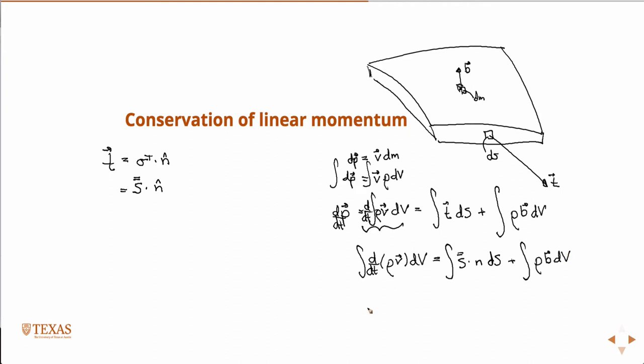Does anyone remember from vector calculus, Calc 3, if you had a vector field or a tensor field times a normal vector integrated over an area, there's a theorem that allows you to convert this to the integral over a volume? It's called the divergence theorem. So the divergence theorem allows me to convert this integral to the integral over a volume. Go back and look at your calculus textbook.